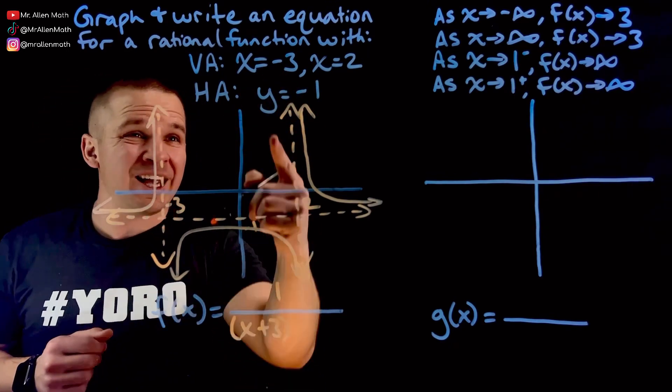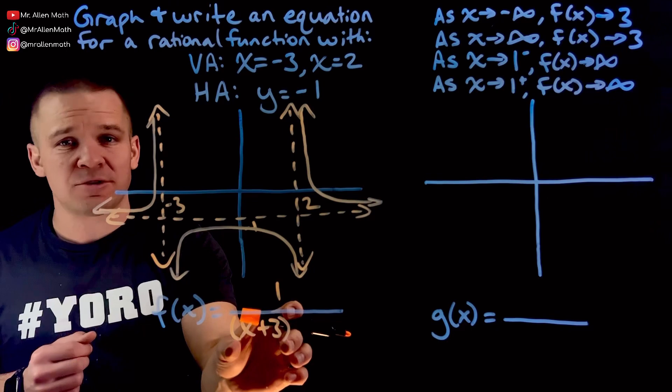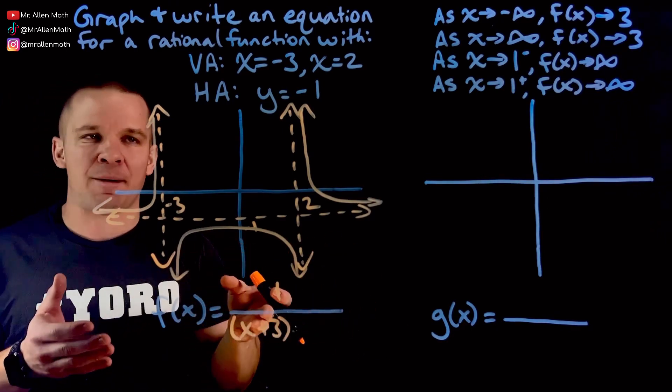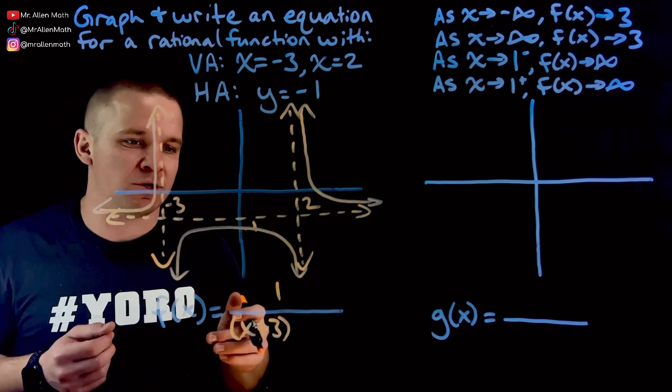Because when I plug in negative three for that x, that makes this factor zero and anything times zero is zero. And now I have zero in my denominator, it's undefined. That's where we get our asymptotes from.